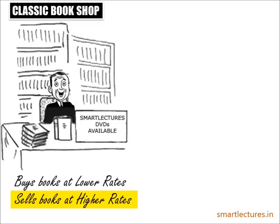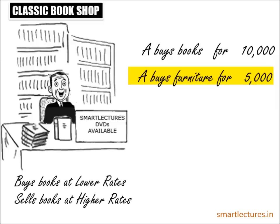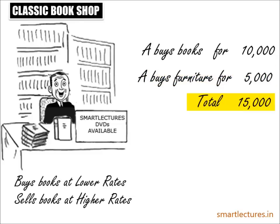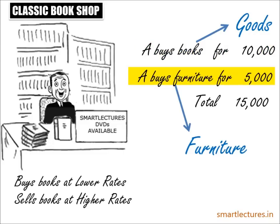For example, he buys books for Rs 10,000 and spends Rs 5,000 on furniture for his shop, because he needs racks to display the books. So he has spent a total of Rs 15,000, but only the Rs 10,000 spent on books will be called goods — not the Rs 5,000 spent on furniture — because the books have been purchased for the purpose of selling at a higher price to make profits. The furniture was not bought for resale.